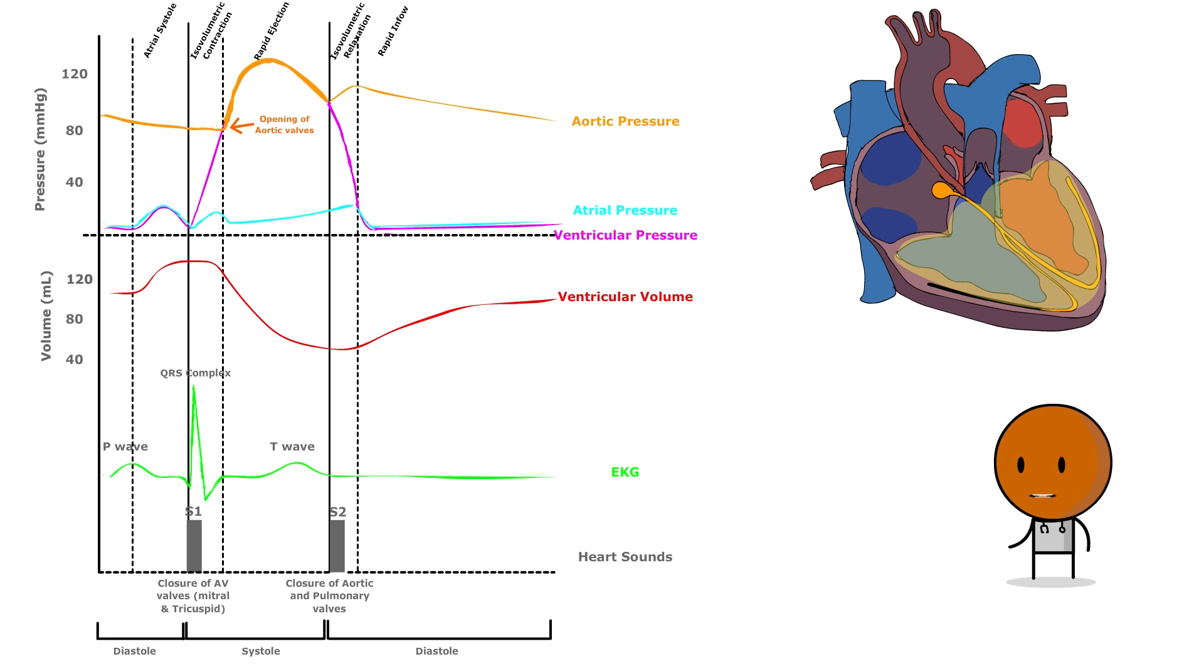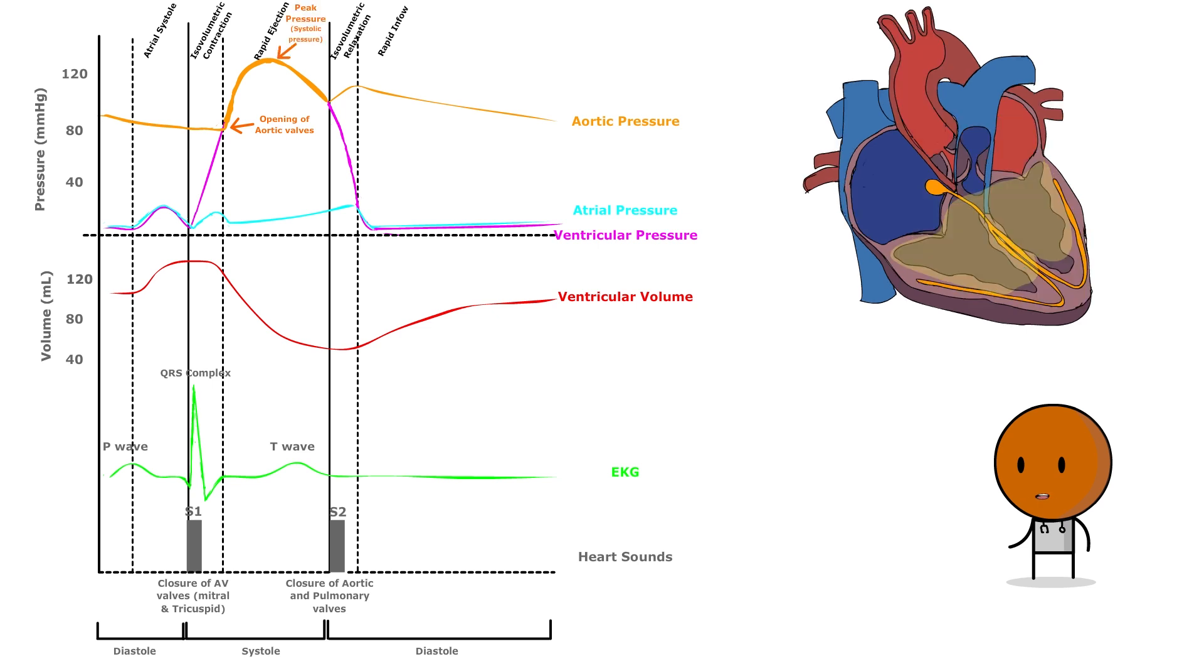Blood is ejected from the left ventricle into the aorta, causing a rise in aortic pressure. This results in the peak pressure during the cycle, known as systolic pressure.